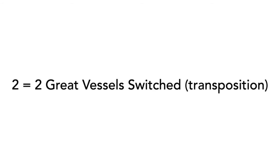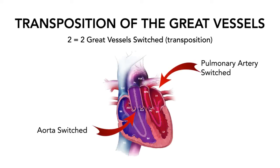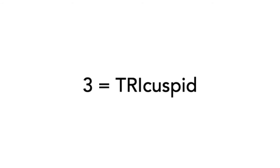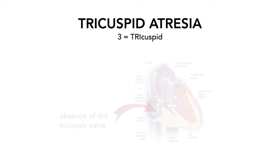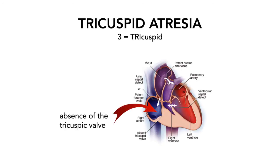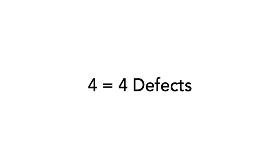Number two represents the major vessels being switched in Transposition of the Great Vessels. Number three stands for Tricuspid, for Tricuspid Atresia. And number four stands for four defects in Tetralogy of Fallot.